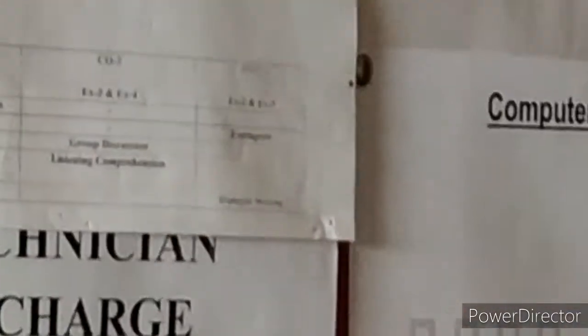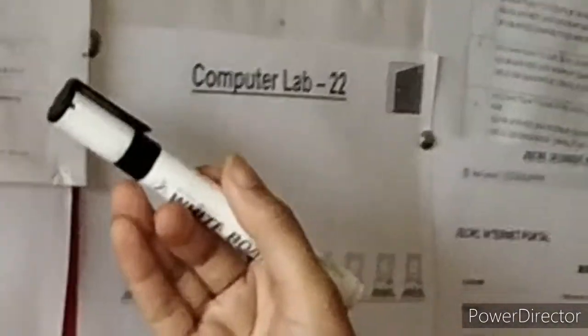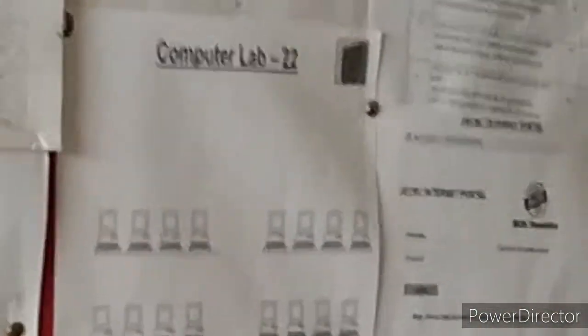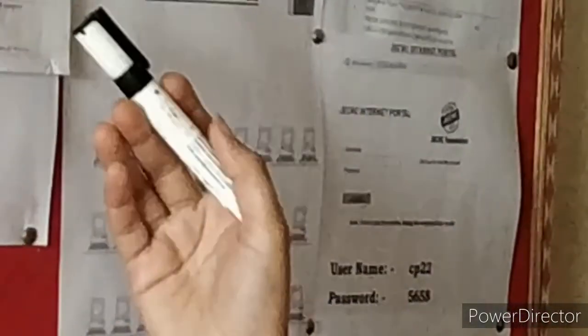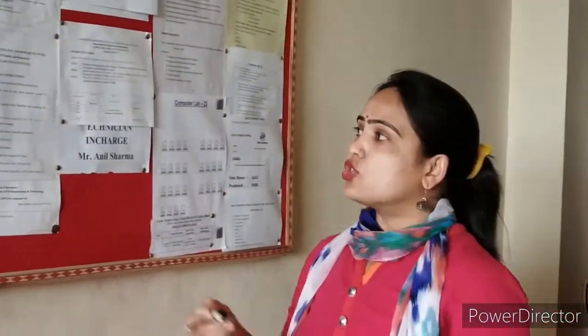The third CO is to think out of the box and frame dialogues for various situational contexts and develop confidence to speak in public. This is a very important CO and it will be covered through the topics extempore and dialogue writing.